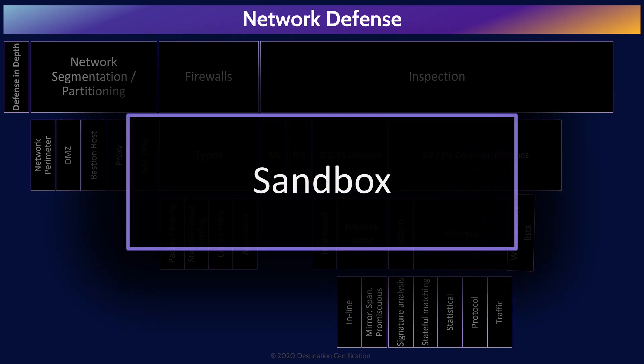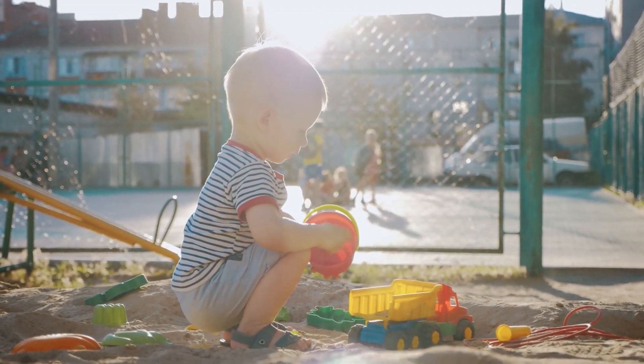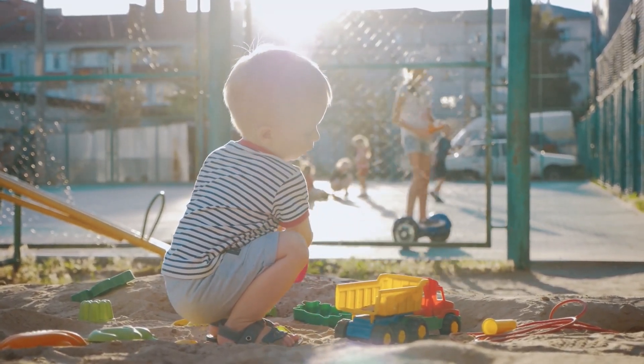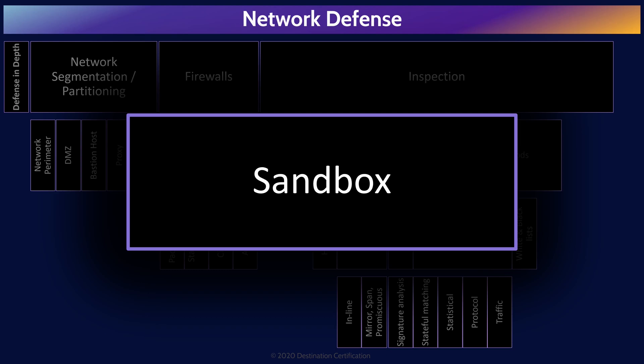The final detection method is sandboxes. Sandboxes provide a safe area to run untrusted code and then observe what the code is doing — attempting to install ransomware, perhaps. An IDS or IPS system could detect that an executable file is being transmitted, take a copy of that executable, and run it in a sandbox to see what it does. And if something nefarious is detected, the IDS or IPS can alert and potentially even block the file from being sent to the intended victim system.